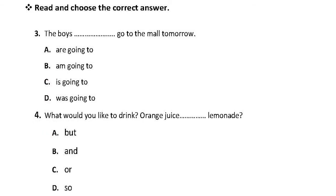Number three: 'The boys ___ go to the mall tomorrow.' Be careful — 'tomorrow' is a time expression for the future tense, and 'the boys' is plural, so we use a plural form: 'The boys are going to.' If it were 'the boy' (singular), we would use 'is.' Number four: 'What would you like to drink? Orange juice ___ lemonade.' There are two choices, so we use 'or' — 'Orange juice or lemonade.'